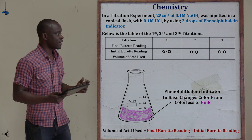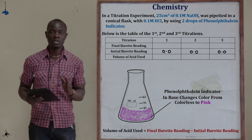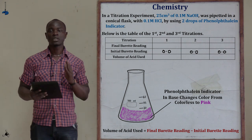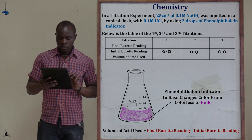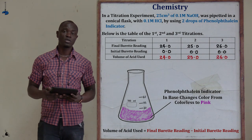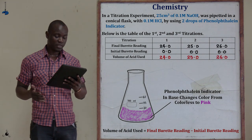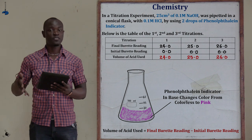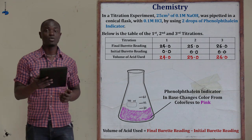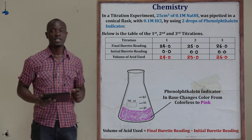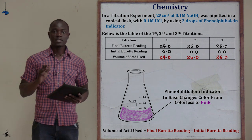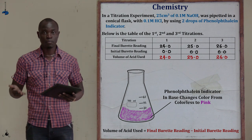Filling the table gives you three marks, or depending on what the examiner asks. The first final burette reading value is 24, the second for titration two is 25, and the third for titration three is 26. So final readings are: 24 for titration one, 25 for titration two, and 26 for titration three. We assume all initial values are 0.0.